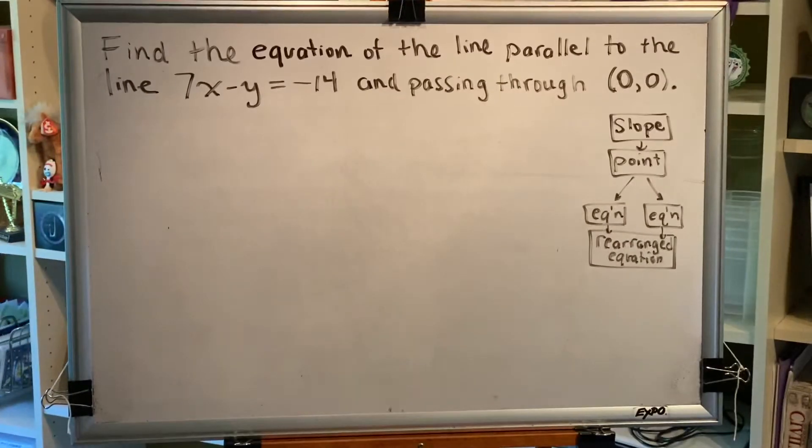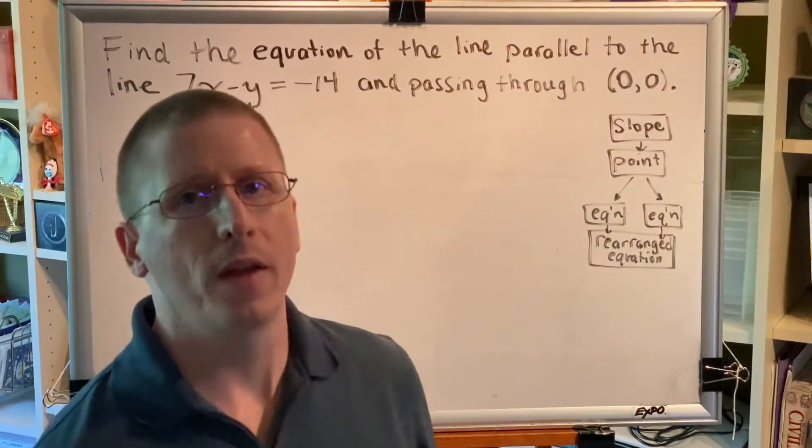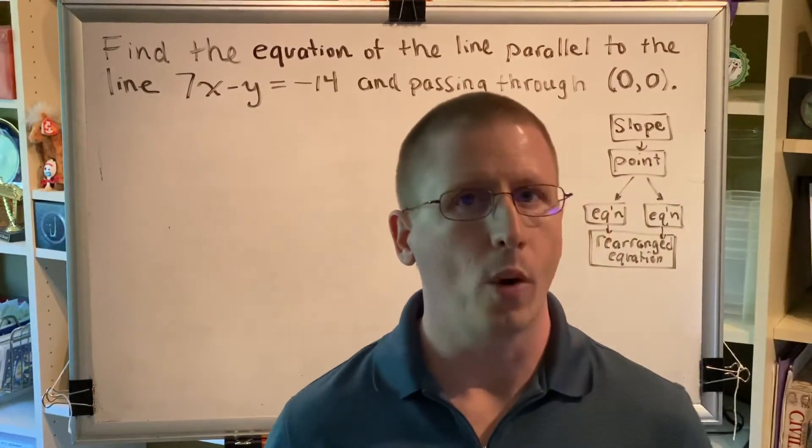Remember when we're asked to write the equation of a line, there was a flowchart and we were told that to write the equation of a line you need two things: a slope and a point.